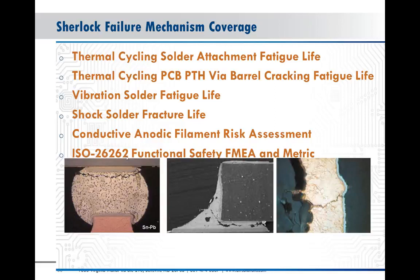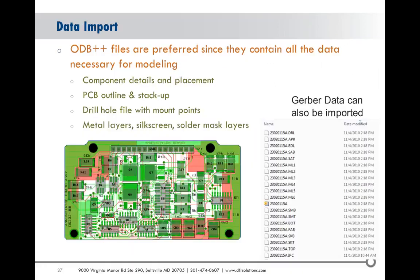Vibration and shock — if your board is going to be mounted in a chassis with certain mount points, you shake or drop the product and can predict how much strain is exerted on the solder joints. Conductive anodic filament formation — a type of corrosion or metal migration that can short out boards — can also be modeled. The software also includes FMEA tools and MTBF calculations for those who want them.